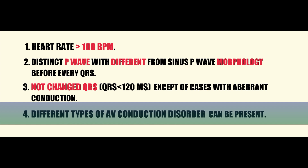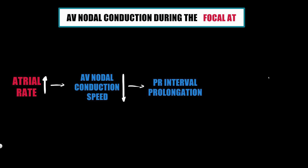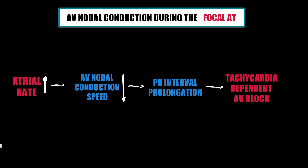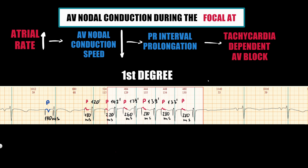The last criterion is AV conduction disorder during focal atrial tachycardia. As atrial rate increases, AV nodal conduction speed decreases, leading to prolongation of the PR interval and in some cases tachycardia-dependent AV block. This is a result of normal rate-dependent slowing of conduction in the AV node. It can manifest as first-degree AV block, as seen in the earlier ECG examples, where the PR interval increases together with the atrial rate.